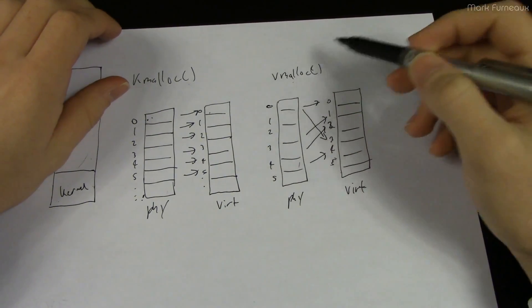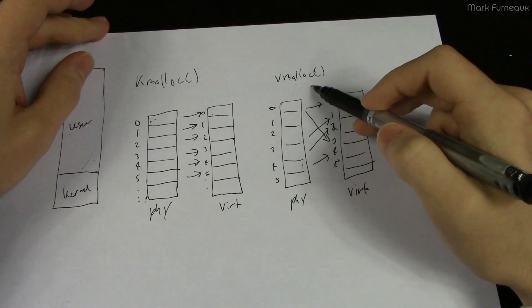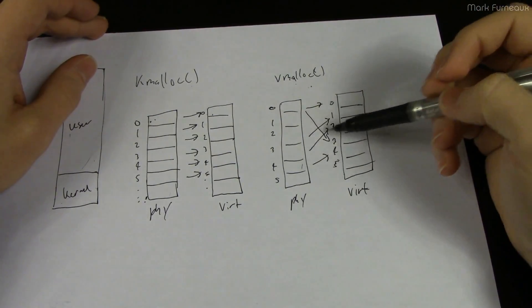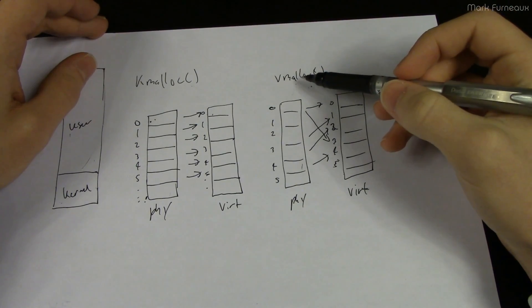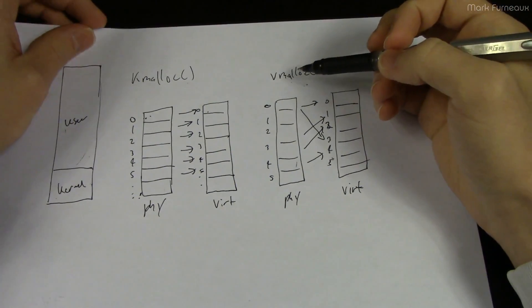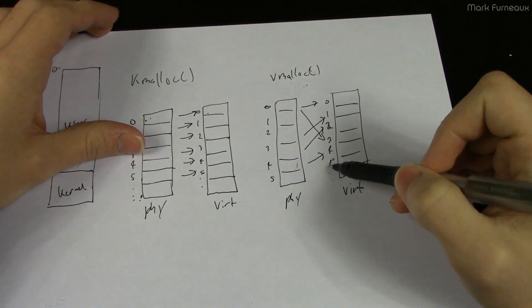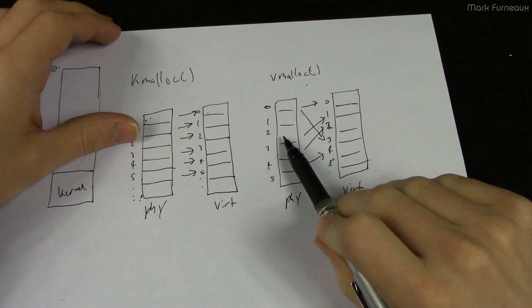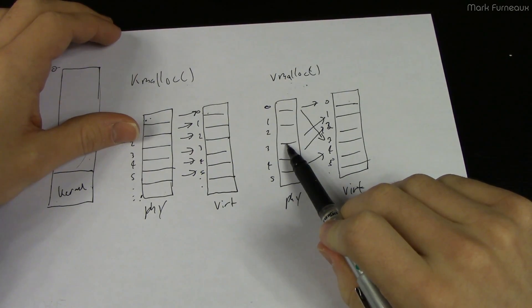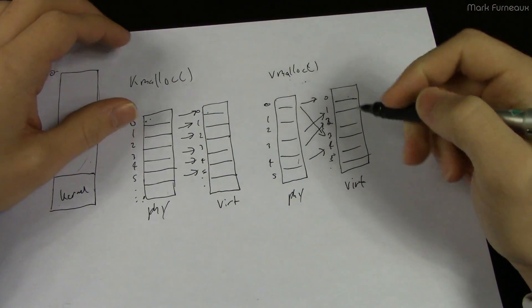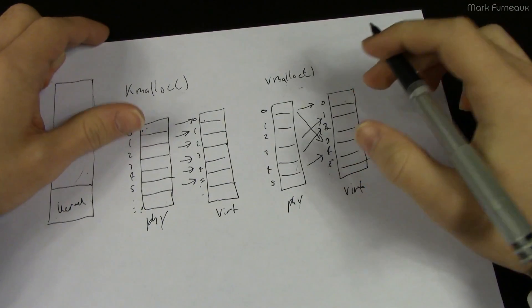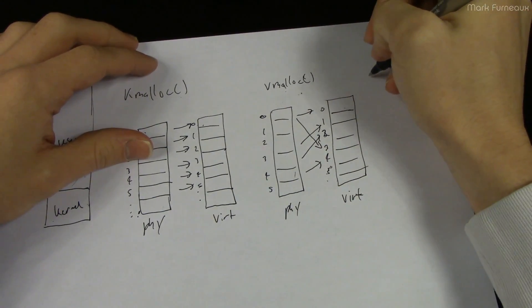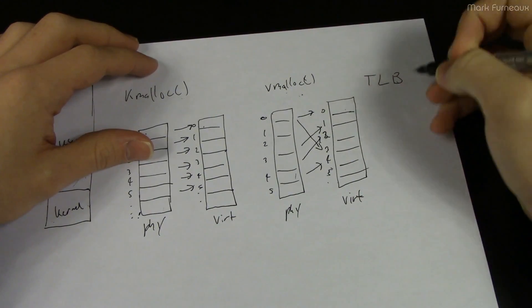Now the problem with vmalloc... there's a couple problems with vmalloc. The first one is it's very slow because it has to do this translation between the two. It has to do this allocation and not only is allocating memory slow but it actually slows down the system because this translation of course you have to keep a table which says this page in virtual address space maps to this page in physical address space.